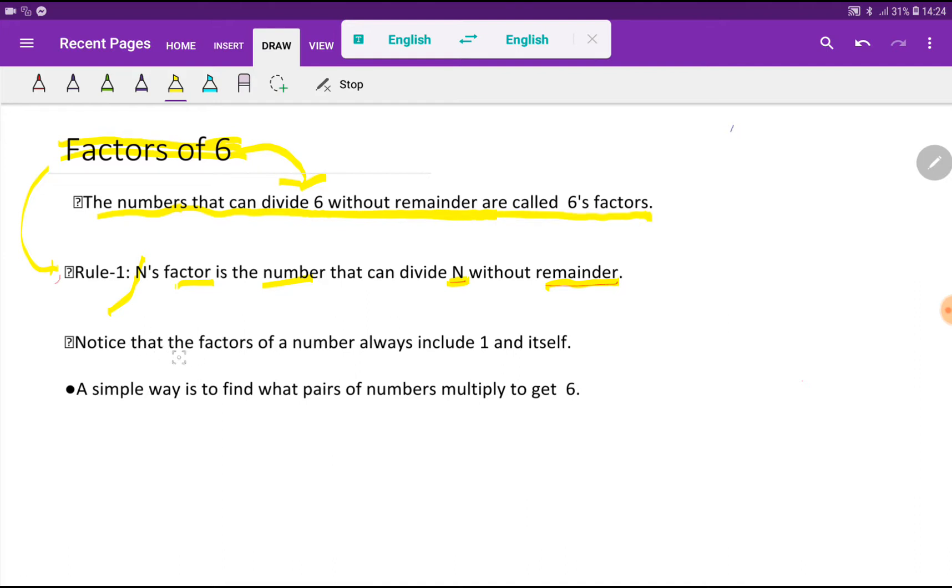Notice that the factors of a number always include 1 and itself. So the factors of 6 will be 1 and 6, that is itself.